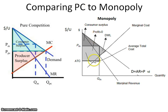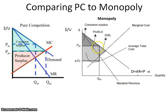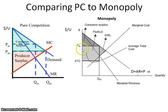So what we have over here is this monopoly graph. You can see here your demand equals average revenue equals price. You have your marginal revenue curve that's lower than that, because for a monopoly, in order to increase its output, it has to lower the price for not only that additional unit, but for all previous units. And so that's why the marginal revenue is less than the demand for the monopoly graph.